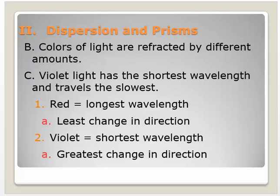Colors of light are refracted by different amounts. Violet light has the shortest wavelength and travels the slowest. So as you can see here, violet has the shortest wavelength and greatest change in direction. Red has the longest wavelength and the least change in direction.